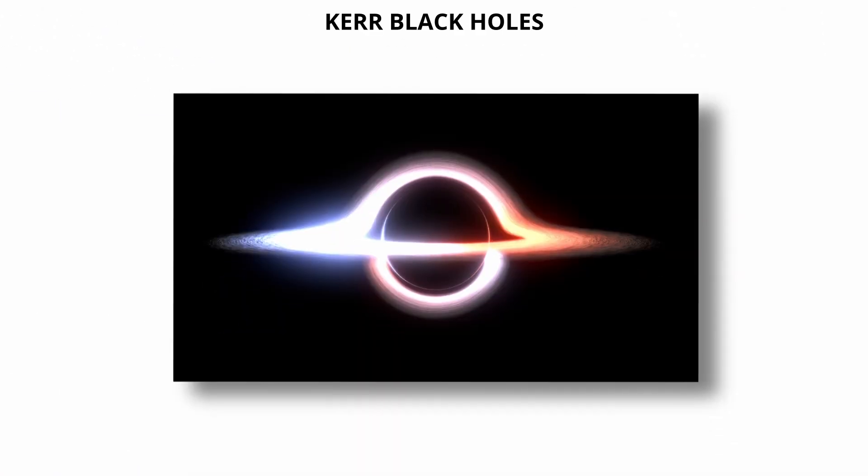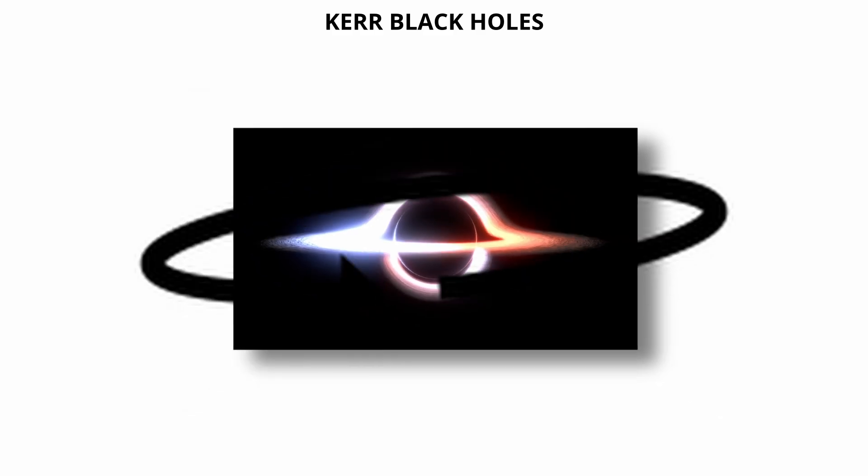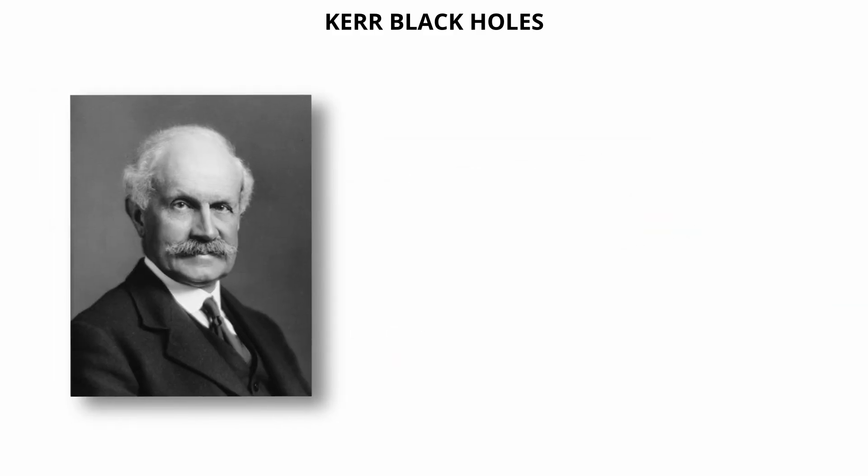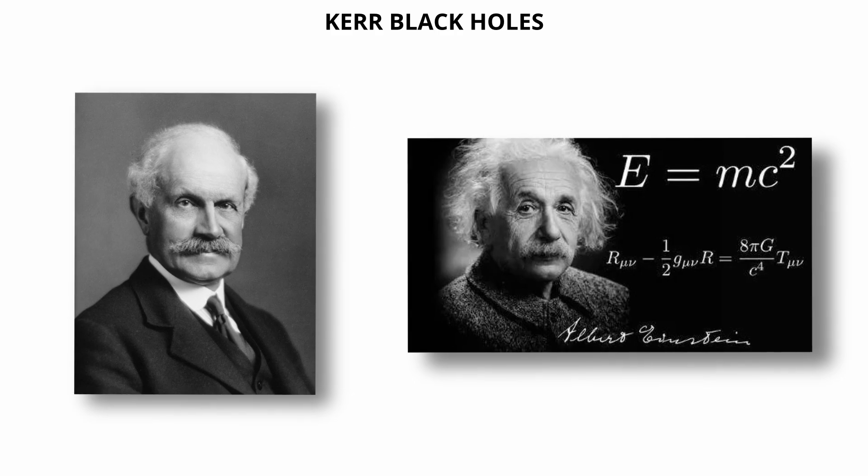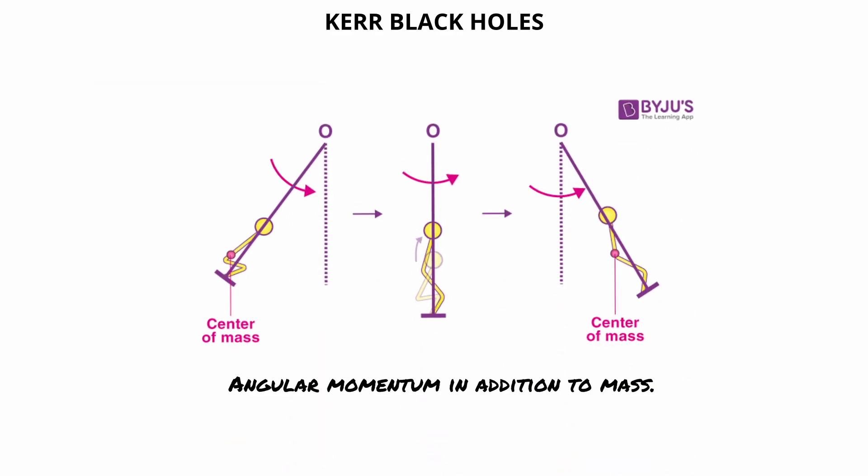Kerr black holes. Kerr black holes are a specific class of black holes that rotate. They are described by the Kerr solution to Einstein's equations of general relativity, which accounts for angular momentum in addition to mass.